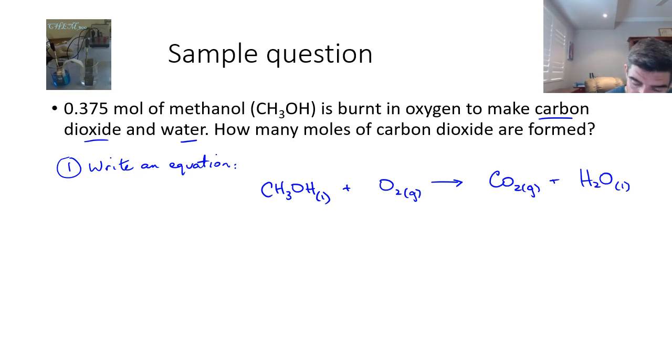The next step is balance. And this is a critical step. We have to balance to make sure that this equation is balanced. Now, there's one carbon here and one carbon here, so I'm happy with that. There's three and one, which is four hydrogens here, but there's only two over here, so I'm going to put a two in front. So now I've got four.